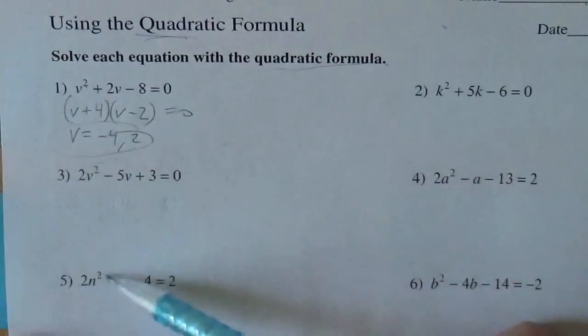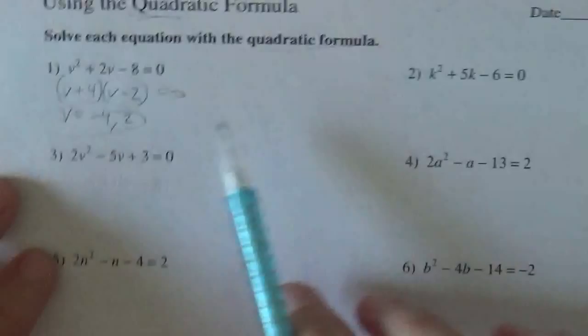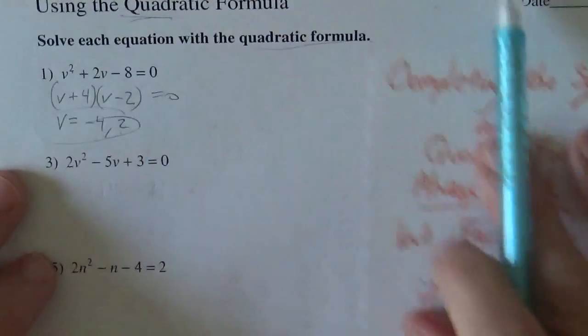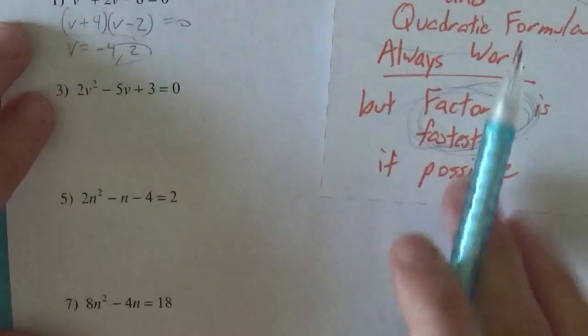So again, we have a bunch of quadratic equations. All the highest power, meaning the highest power is 2. And the first one I did using all three methods, but now I'm just kind of going to go for which one works best.